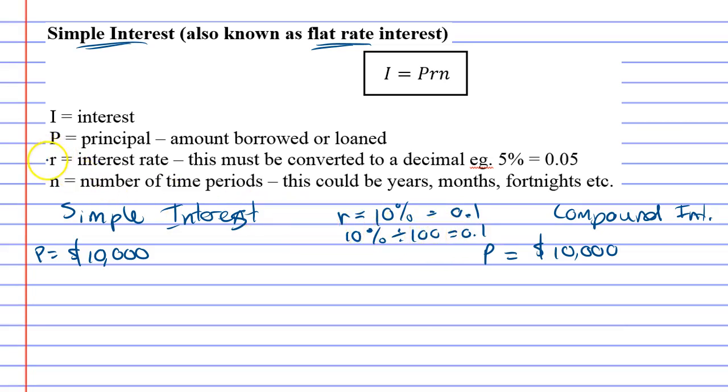We've got our interest rate, we've got our principal, and n represents number of time periods. Let's say that you borrowed 10 grand and at the end of the year the bank charges you interest. Now 10 percent of 10 grand is a thousand dollars. So at the end of the year, whether it's simple interest or compound interest, they're gonna charge you the same amount of interest which is $1,000.